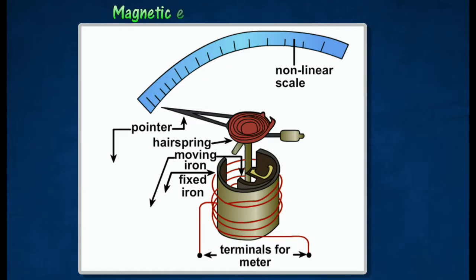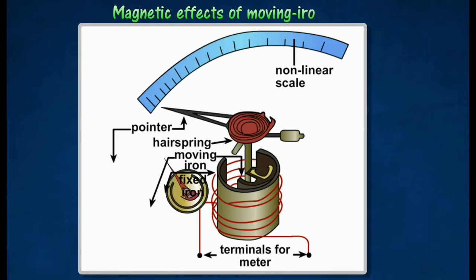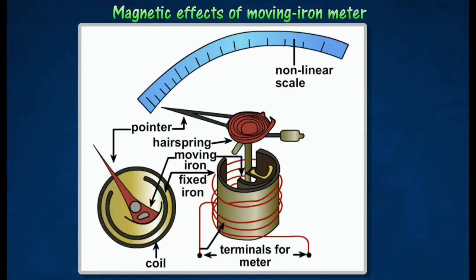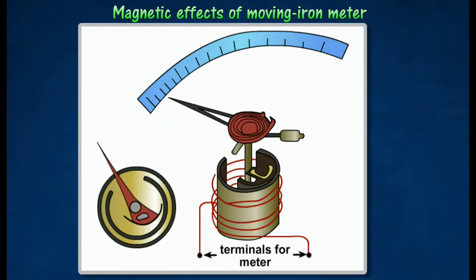When a current is flown through the coil, both the bars are magnetized with like poles adjacent to each other. Repulsion takes place, causing the smaller bar to rotate until it is stopped by the control couple, provided by the hairsprings.